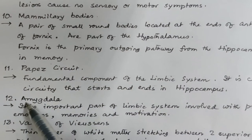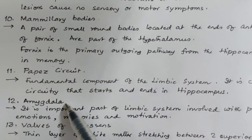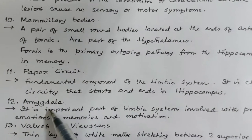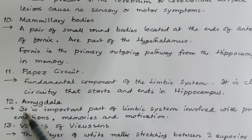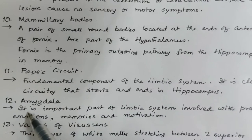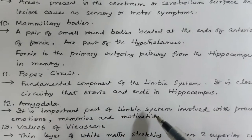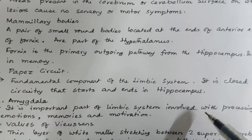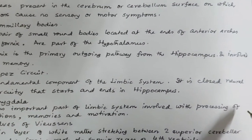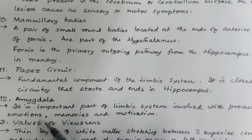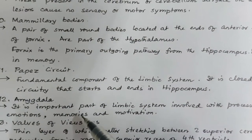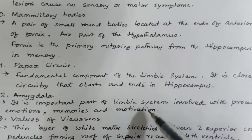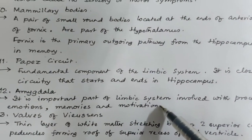Have you heard about the amygdala? The amygdala is a neural structure in the brain and an important part of the limbic system, involved with processing of emotions, memories, and motivation.